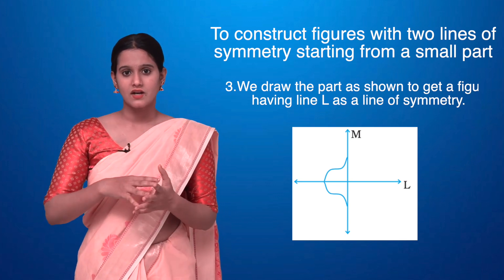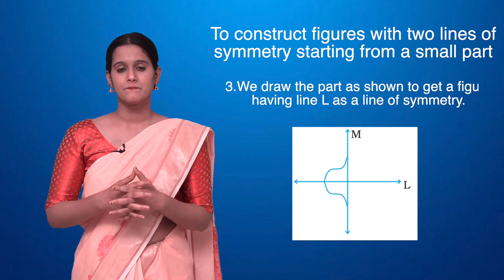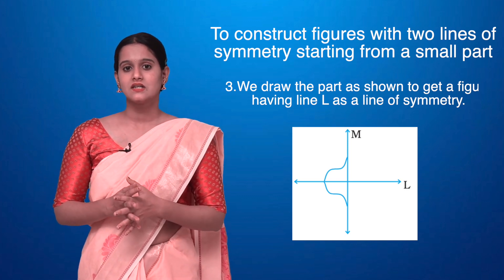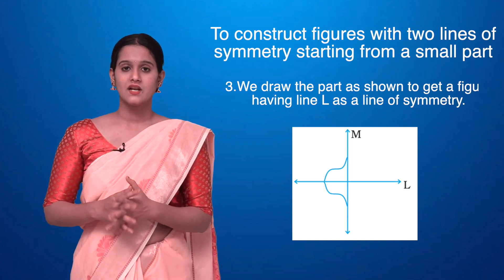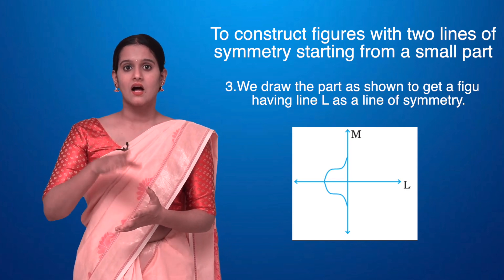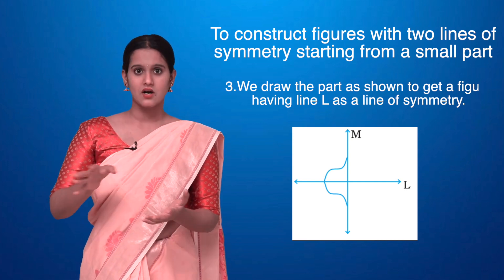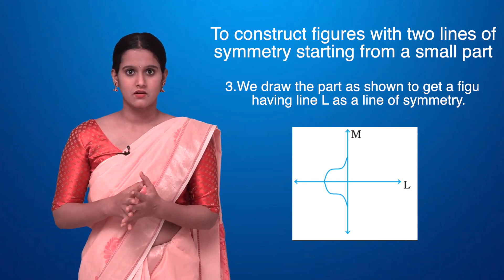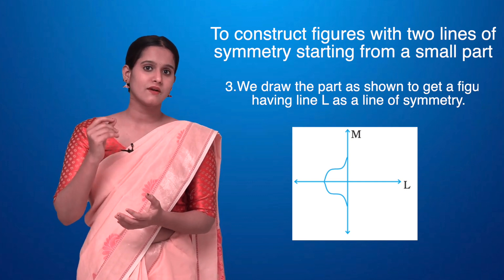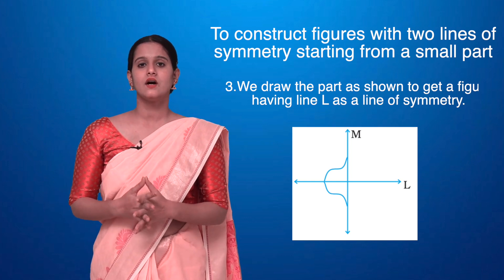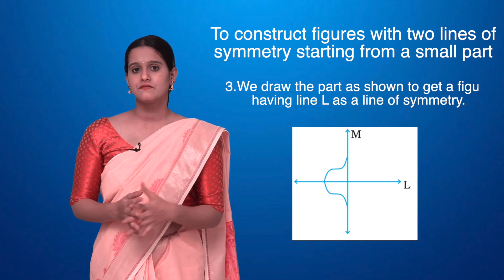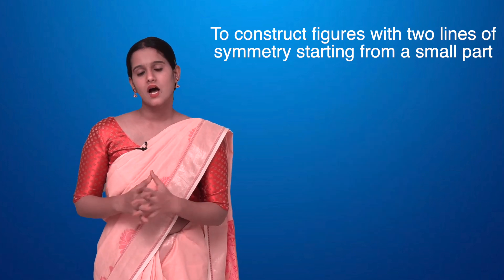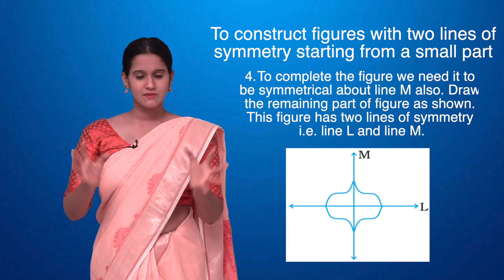After reflecting along line L, I draw the mirror image on that side. Now let's consider the vertical line M. Drawing the symmetrical half along line M completes the full figure. In this completed figure you can clearly see the two lines of symmetry, L and M.